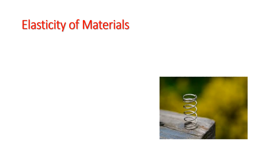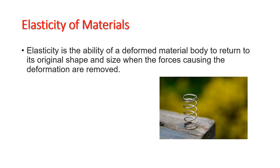What is elasticity of materials all about? First, let us define what is elasticity. When we say elasticity, it is the ability of a deformed material body to return to its original shape and size when the forces causing the deformation are removed. So, meaning, once you apply a force on a certain material, it deforms, and then, after removing that applied force, it is the ability of that material to return to its original shape or size.